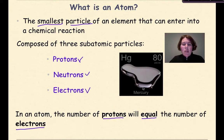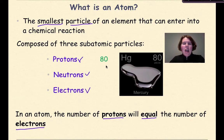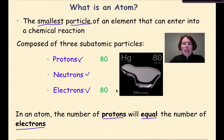So when we look at this image of mercury right here, the protons is going to be 80, because that's my atomic number. And therefore, if the protons are 80, the number of electrons have to be — you guessed it — 80.